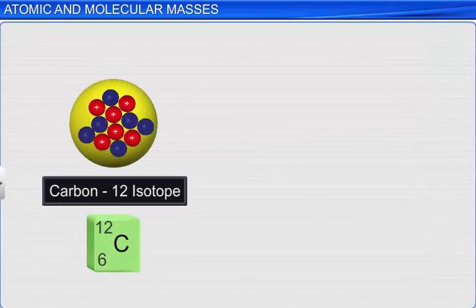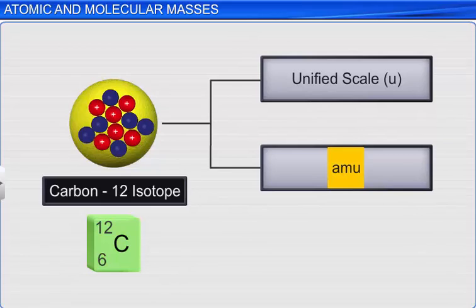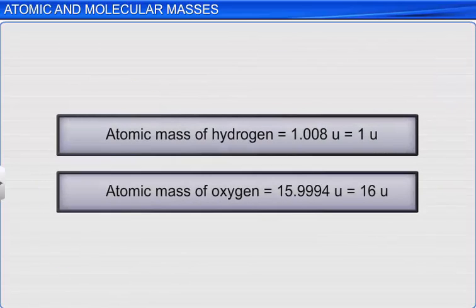When chemists expressed atomic mass on the carbon-12 scale, they named it the unified scale and the unit was represented as U instead of AMU. Though AMU is still used in most places, chemists now use U as the unit. Hence, we can represent the atomic mass of hydrogen as 1.008 or 1U, and that of oxygen as 15.9994 or 16U.